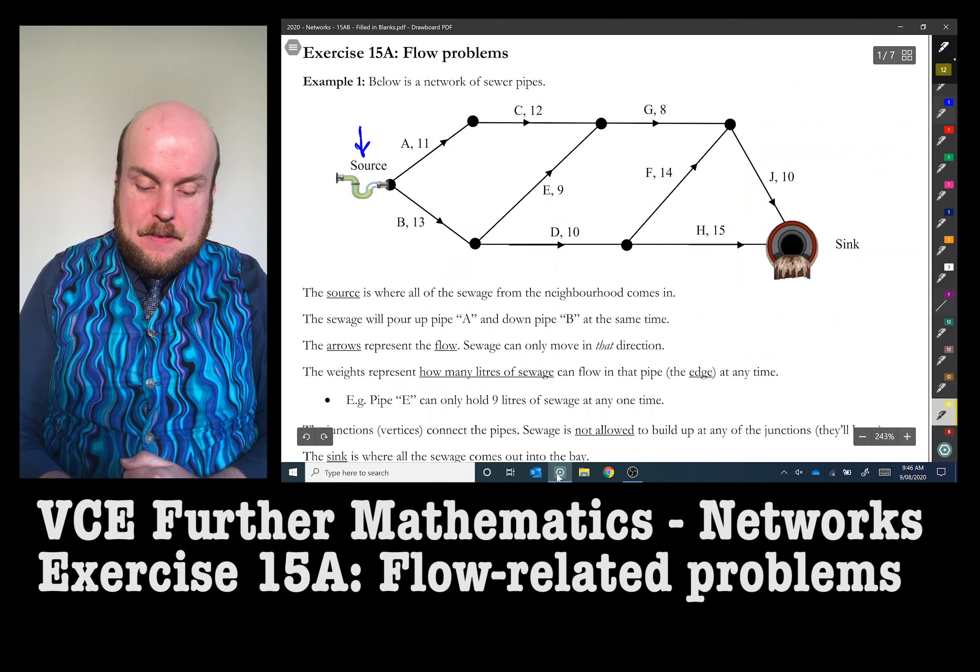So just to clarify what that means, if I have 11 liters going up through pipe A, that can flow through this pipe C, because C can have a maximum of 12 liters of sewage. But it will get clogged at pipe G, because pipe G can only hold eight. So therefore, there would be about three liters stopped here. And that would cause that vertex or connection to burst. So we can't have that.